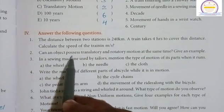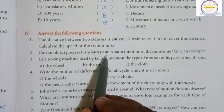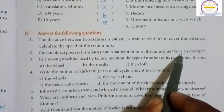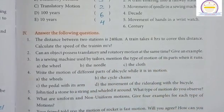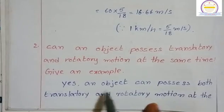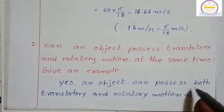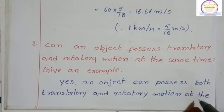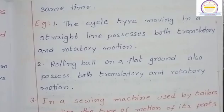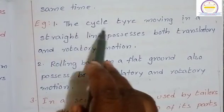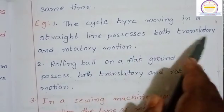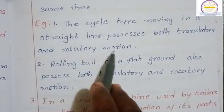Second question: Can an object possess translatory and rotatory motion at the same time? Give an example. An object can possess both translatory and rotatory motion at the same time. Example: the cycle tire moving in a straight line possesses both translatory and rotatory motion.